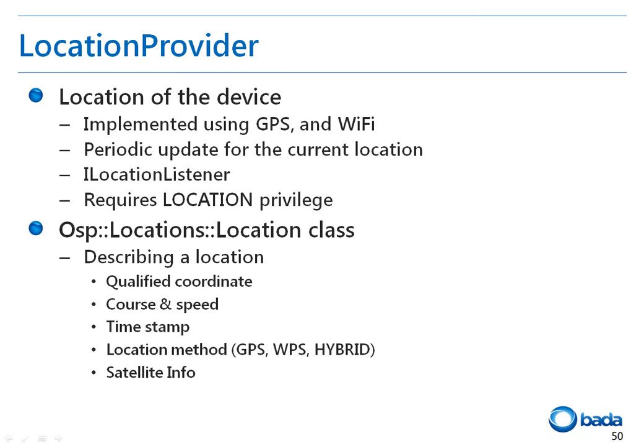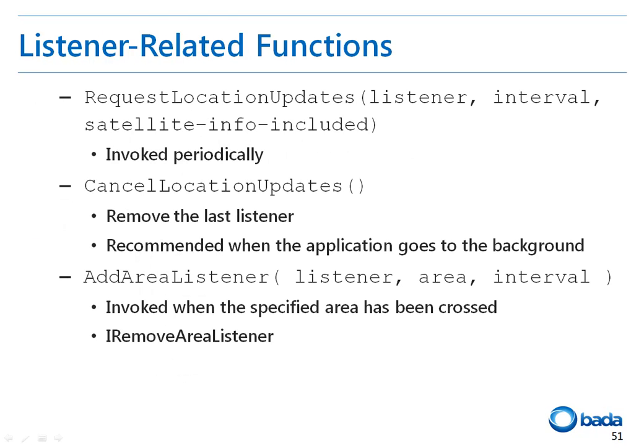Let's have a look at the location provider class that returns the current location in detail. The location provider class contains APIs that belong to the location privilege group. It is used to get the current location of the device using either the GPS of the device or the surrounding Wi-Fi access points. The location provider class also has a function to report the current location at a predetermined interval. The location is returned in the location class, which provides the coordinates to figure out the current position, the direction, velocity, the timestamp, the method used to get the location, and if there's GPS, the satellite information.